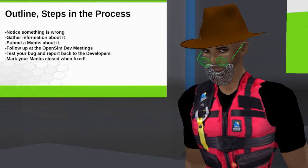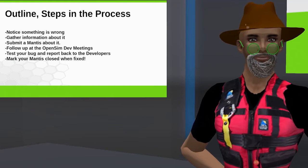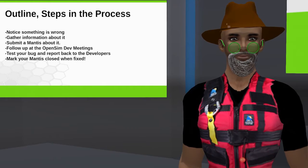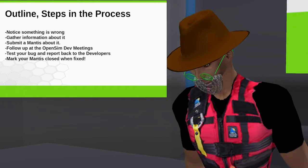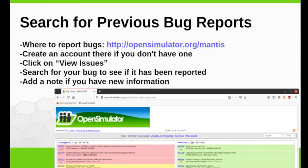So here's the outline of the process. When you notice something is wrong, you should try and learn as much as you can about it to gather information. There's a process called submitting a mantis, and later I highly recommend that people who report bugs go to the OpenSim Open House developers meetings. When your bugs are hopefully and quickly fixed, you can test them and report back to the developers. Then you can mark your mantis bug reports as having been fixed. The first step in gathering information is to check and see if somebody else has already reported a problem that you've seen. The URL opensimulator.org/mantis is the hub of tracking and checking bugs in OpenSim.